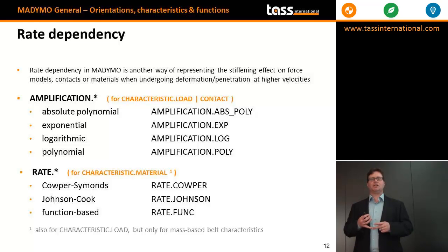The amplification can be specified as an absolute polynomial, or exponential, logarithmic, or a polynomial. The rate keyword can be specified as Cowper-Simons rate dependency, Johnson-Cook rate dependency, or your own user-specified function-based rate dependency.